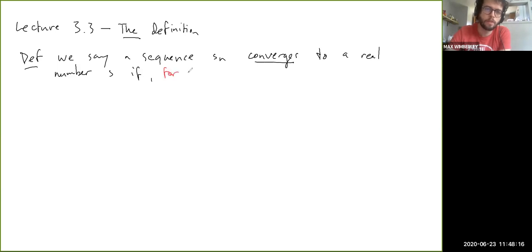For each, let's say for each epsilon—this funny backwards three looking thing is an epsilon—for each epsilon greater than 0,